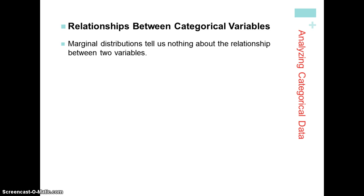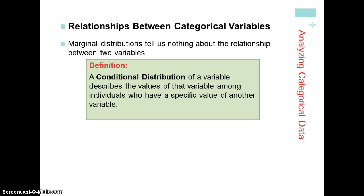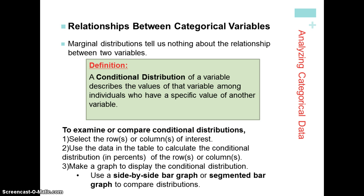The marginal distribution gives us a summary of one variable but doesn't tell us about the relationship between the two variables in the two-way table. For that we use a conditional distribution. A conditional distribution describes the values of one variable among individuals who have a specific value of another variable. Essentially, we use one variable's total as our denominator rather than the grand total, and look at how the other variable spreads out over it.